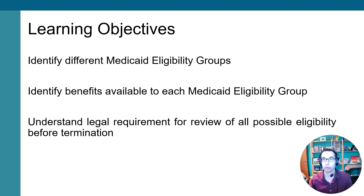Today we're going to be talking about very important Medicaid rules and rights. Medicaid is a very large and important program that provides health insurance for over 2 million New Jerseyans. Beyond health insurance, Medicaid also provides services and supports that people with disabilities rely on to live in their own homes or integrated community-based settings. Our goals today are three specific learning objectives: to identify the different Medicaid eligibility groups, to identify the benefits available under each group, and to understand the legal requirement that prior to any Medicaid eligibility termination, the state review all possible eligibility groups.